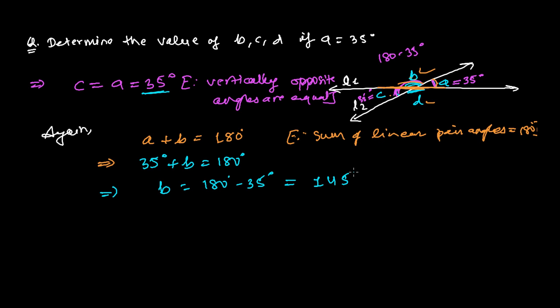So this b is 145 degrees. Now once we get the value of b, we can easily get the value of d because these are vertically opposite angles. Therefore, d equals b equals 145 degrees, and the reason is vertically opposite angles.